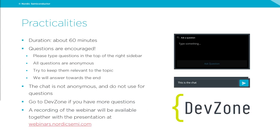Before we get started, let's go through the practicalities. The length of this webinar is around one hour. Questions are encouraged — we like interacting with everybody. Please type questions in the top of the right sidebar where there is an ask questions box. All questions asked are anonymous, so nobody else will be able to see what you ask.